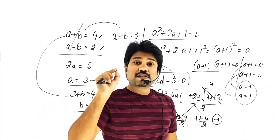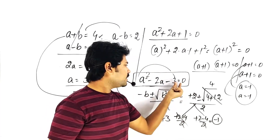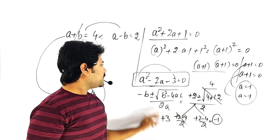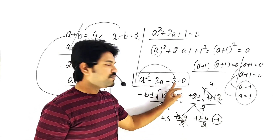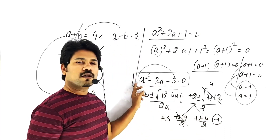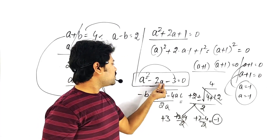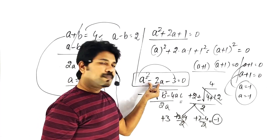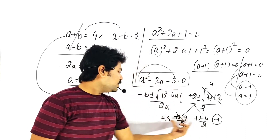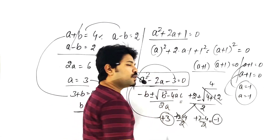This equation with power 2 has two values. If we put a equals 3: 9 minus 6 minus 3 equals 0. If we put a equals minus 1: 1 plus 2 minus 3 equals 0. Only these two values satisfy the equation.